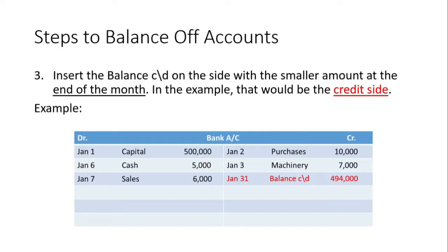We then insert the balance carried down on the side that has the smallest amount at the end of the month. In this example, the side with the smallest amount is the credit side. Note that the balance carried down is not always on the credit side — it is always on the side with the smallest amount. So we insert it on the credit side at January 31. The balance carried down is always entered at the end of the month.